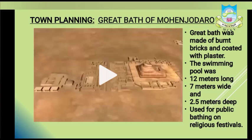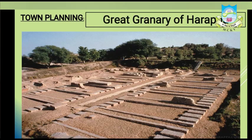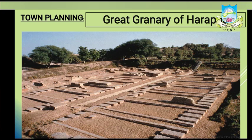The next important building of the citadel area is the Great Granary of Harappa. As seen from the picture, it consisted of a series of brick platforms on which stood two rows of six granaries. Circular brick platforms to the south were meant for threshing grains. A similar type of granary was also found in Mohenjo-Daro. Historians believe these granaries were used to store food grains, which came from the nearby village areas, since the Harappan civilization was city-based.